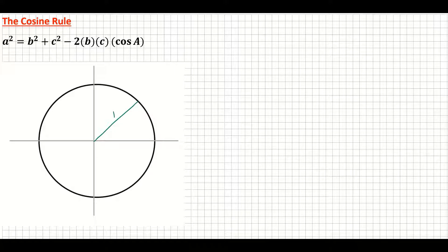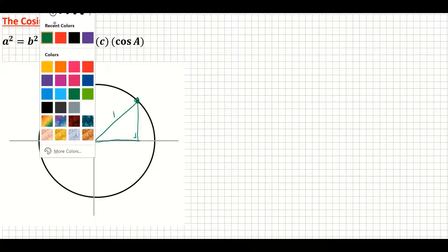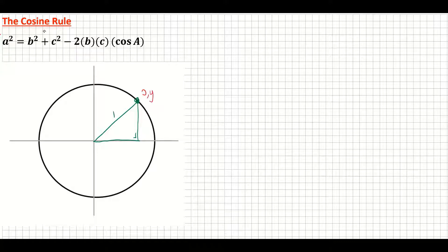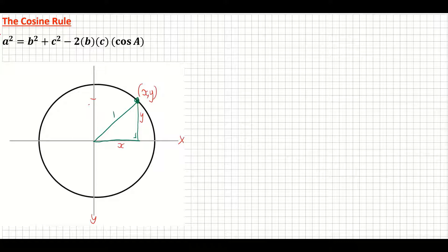We created a triangle out of that radius line and it had a 90 degree angle. The coordinate at the edge of that circle we can write as (x, y) — I went out a distance of x on my x-axis and up y units on my y-axis. Those are the two sides on my triangle, and we looked at our sine, cos, and tan trigonometric ratios.